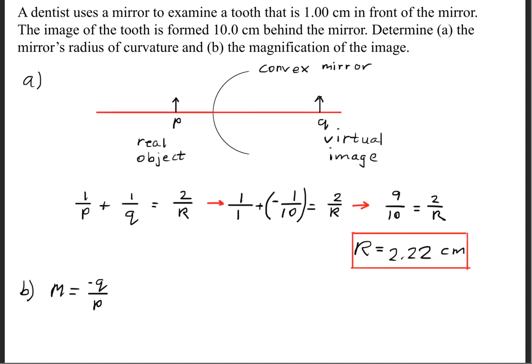For part B, we're going to use the magnification equation, which is negative Q over P. We'll plug in the values, and we'll get a magnification of 10.